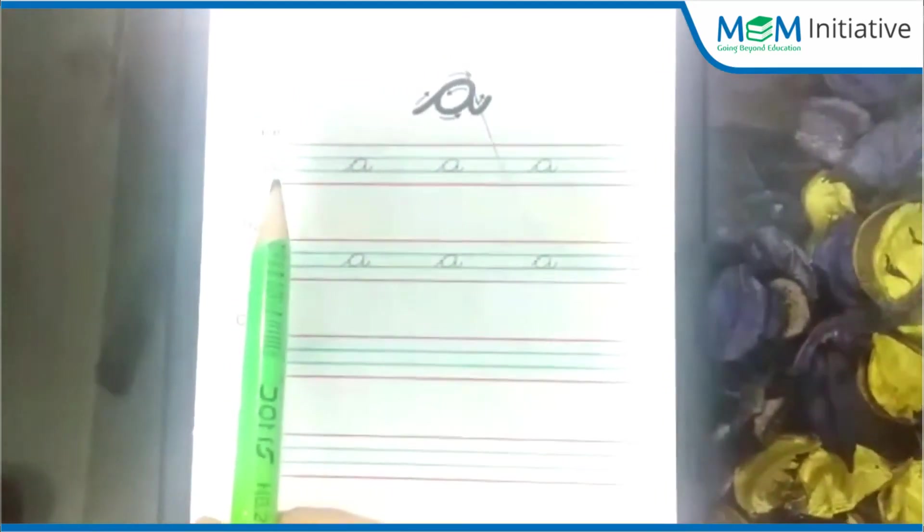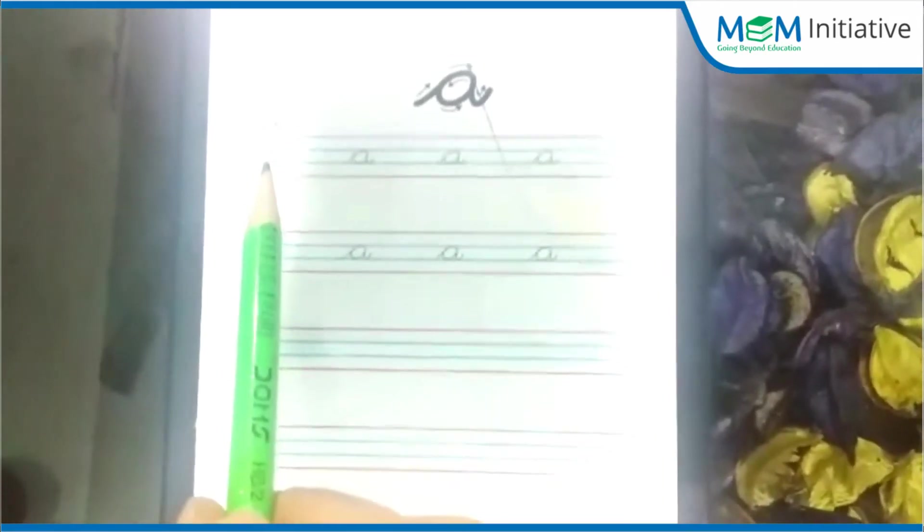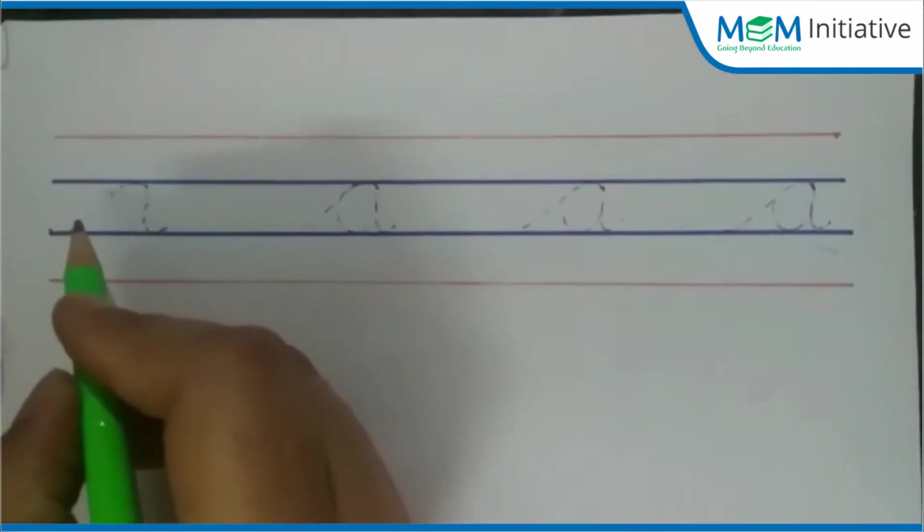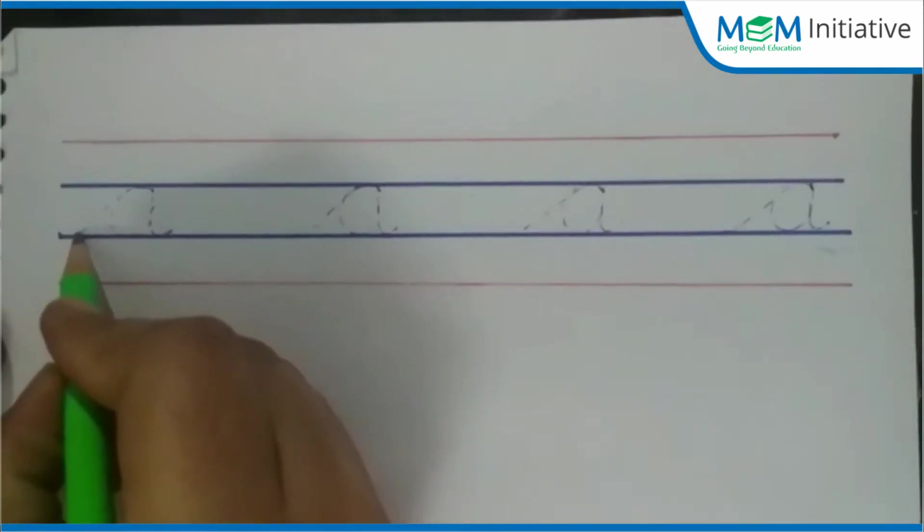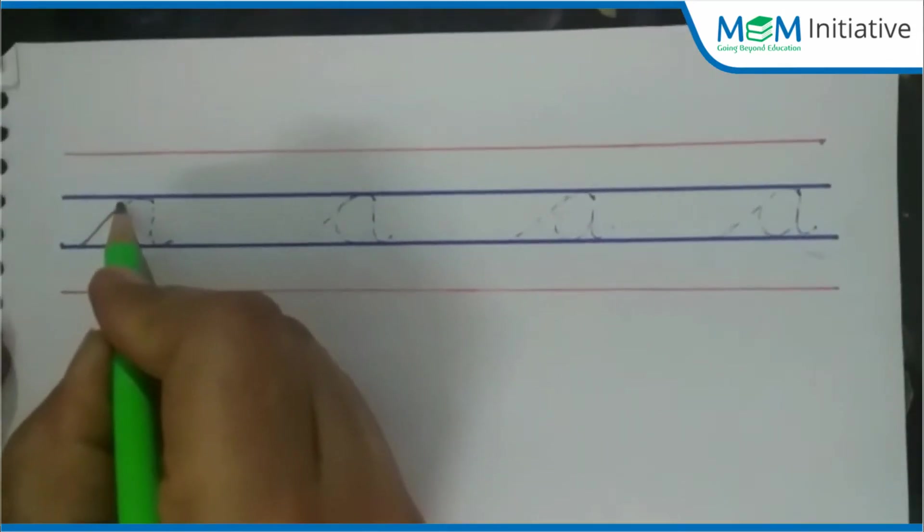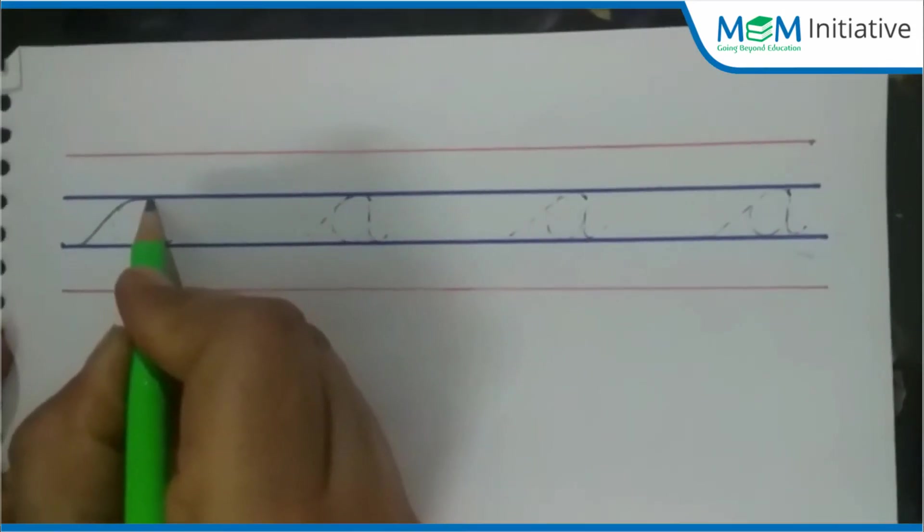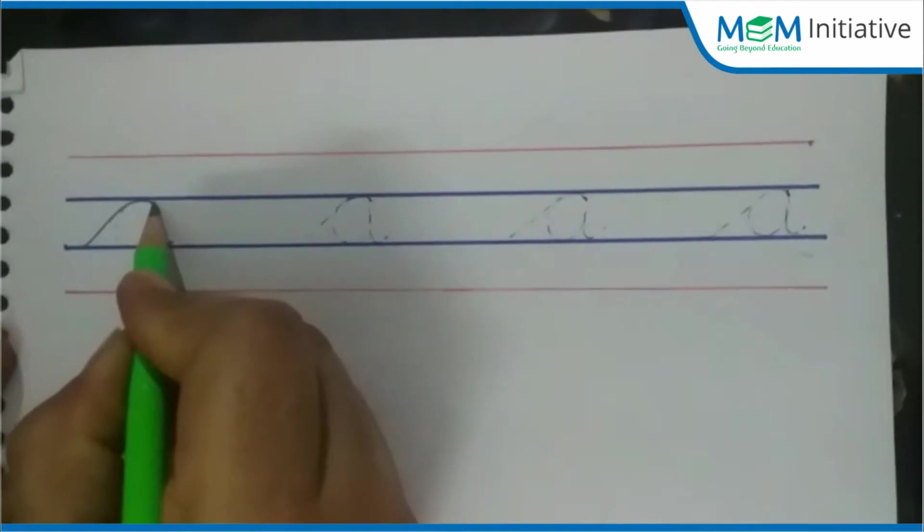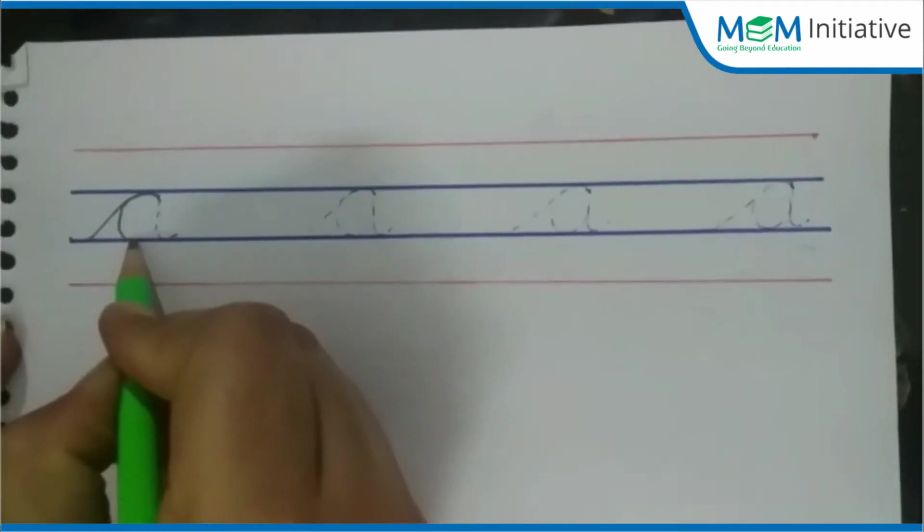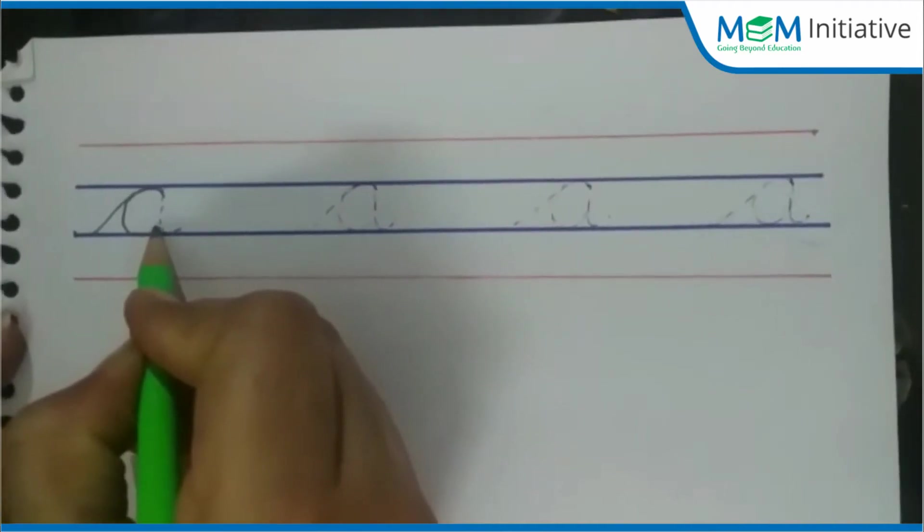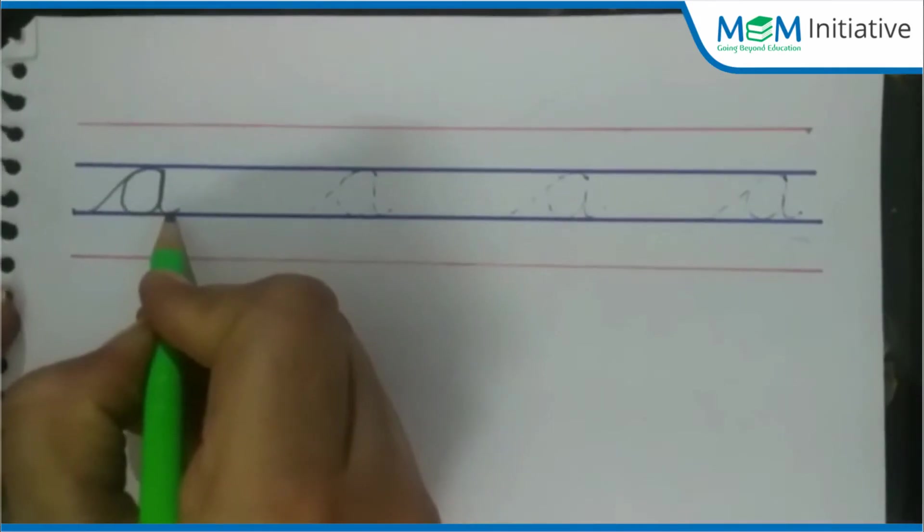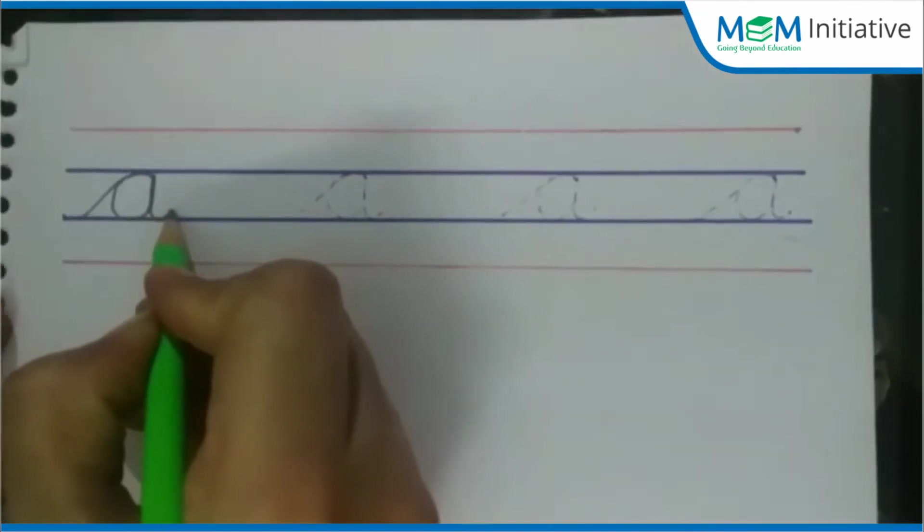Very good. Now we will tell you how to trace the letter. We start with this blue line. Go slant up, and then turn. Come back, draw C, and then close its mouth. Come back and make its tail.